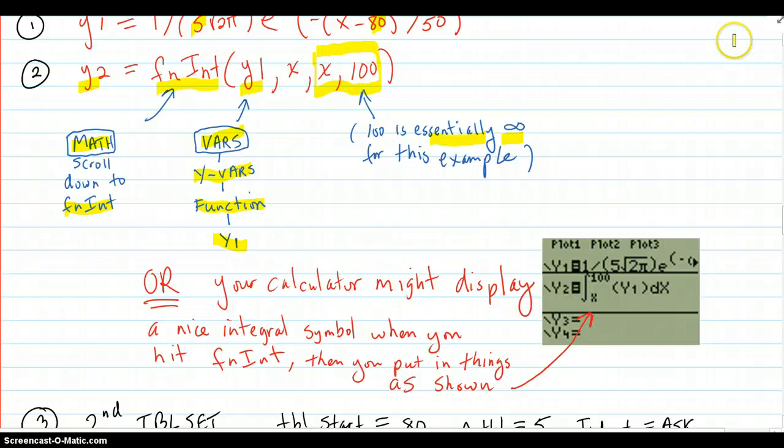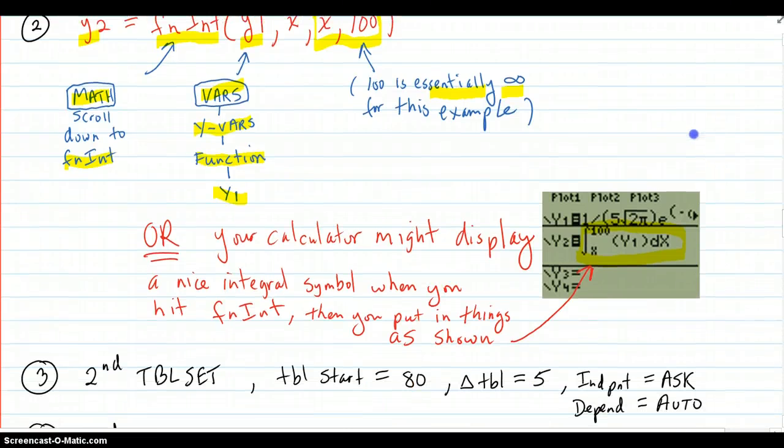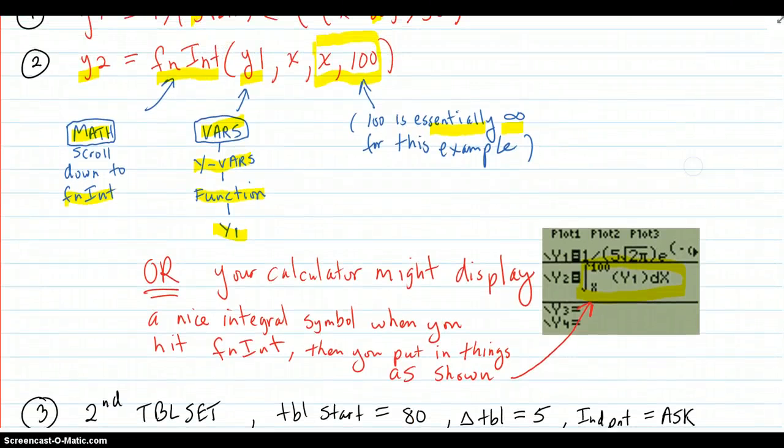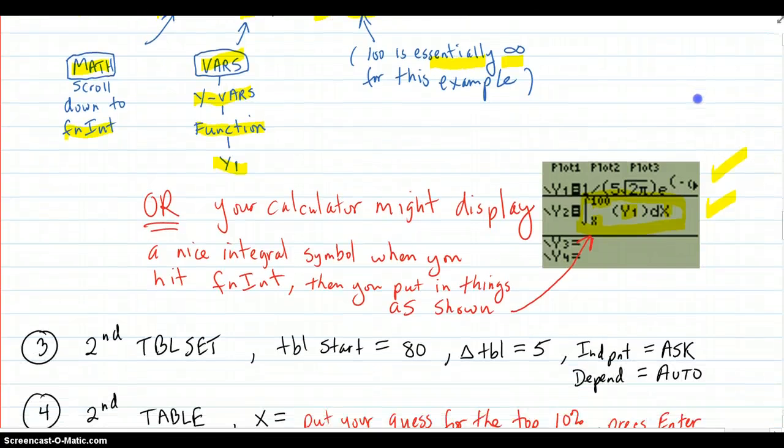Now, you might not see function integral pop up when you select the math function integral. You may see this over here pop into your calculator, y2. That's a newer version. So, you might see that. Okay? So, if you see that, then you put your x here. You put your 100 here, which is what you're using for infinity. You do that vars method of getting to y1. And you put an x in here for the dx. So, you make it look like this. Okay? So, either way is going to happen there in y2. It's either going to be this way, or it's going to be this way, depending on the newness of your calculator.